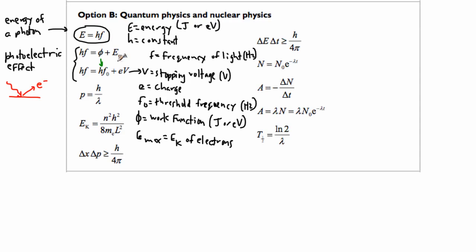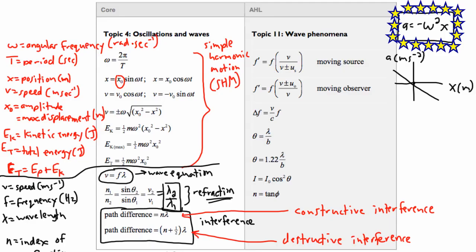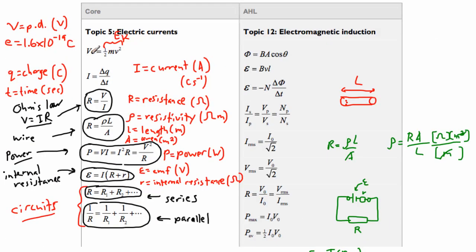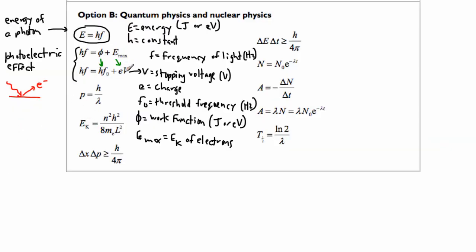What I think is really good about this is that these right here match each other. The work function, which is the amount of energy the light needs to kick out an electron, is the same as HF zero, the threshold frequency. This maximum kinetic energy Emax equals EV. That relates very well to this equation from topic 5. This tells you VE equals the kinetic energy. The voltage times the charge equals the kinetic energy of these particles. So Emax equals EV, they're actually the same.